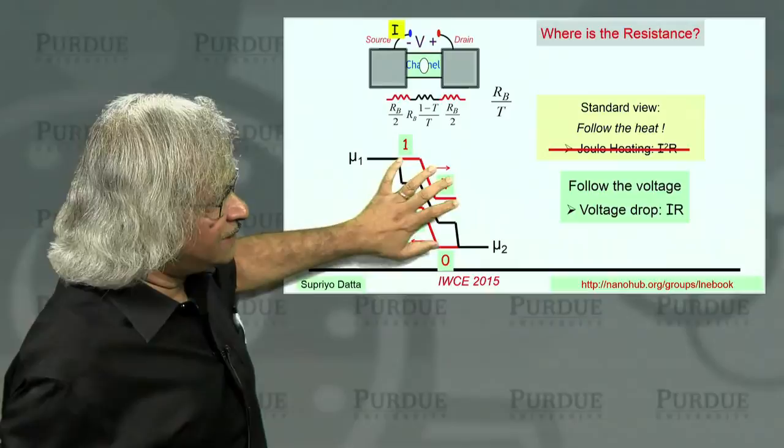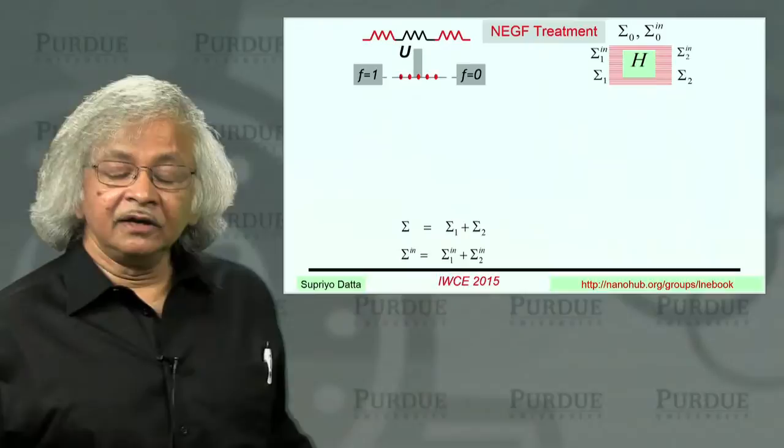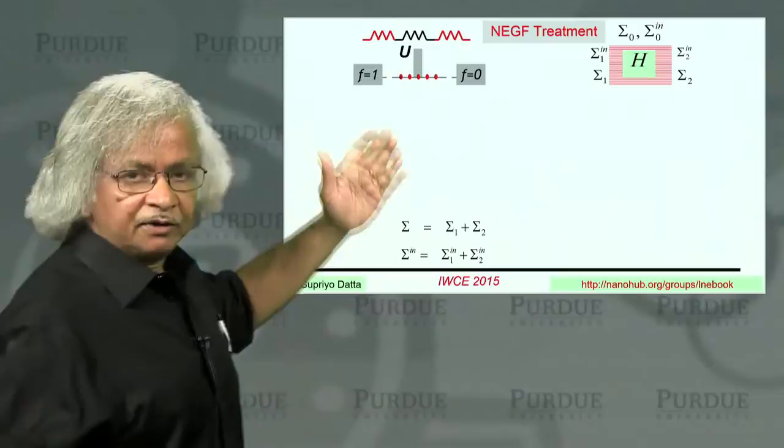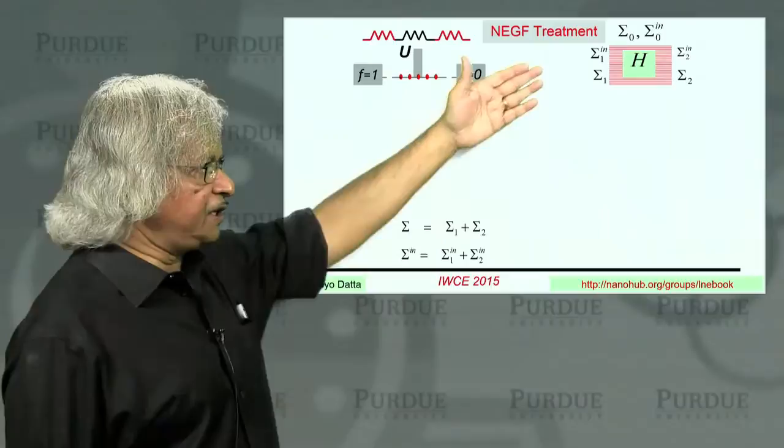So, but once you view the electrochemical potential simply as the filling of the levels, then you can see there's a perfectly simple reason why it drops right at the barrier. And it allows you to locate the resistance. Now, could one have modeled this with quantum transport, with NEGF? The answer is yes. You could do a simple problem. I use this as a homework problem. But if you have a barrier here, you could calculate the filling of the levels, going from left to right, using NEGF.